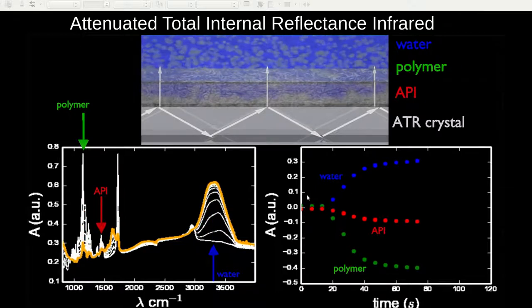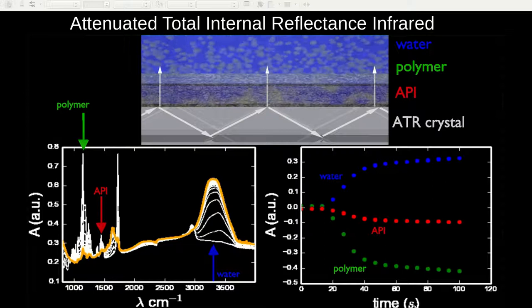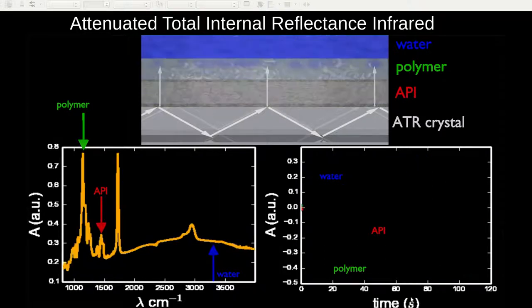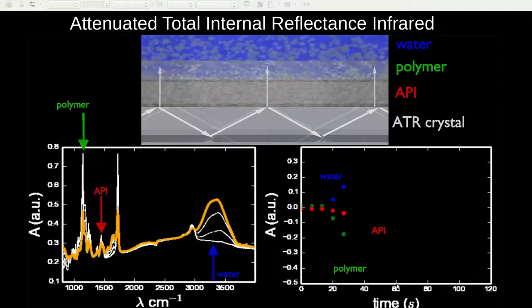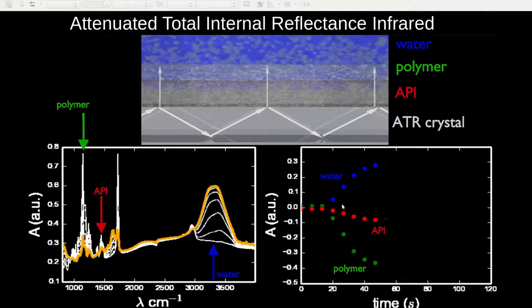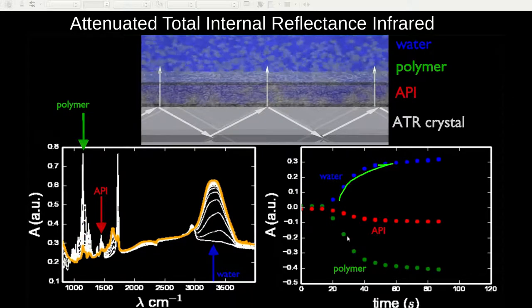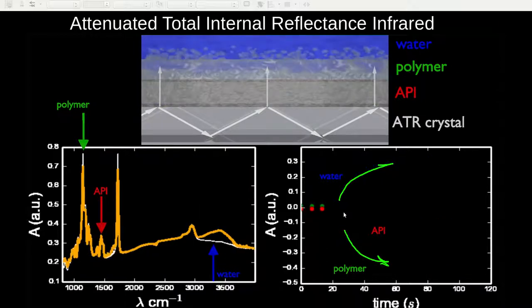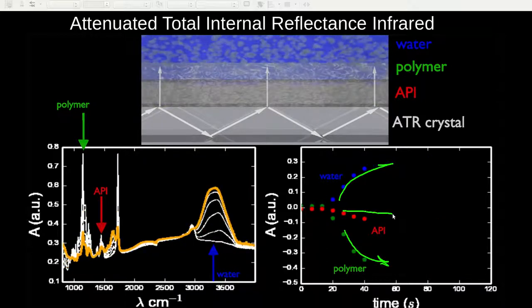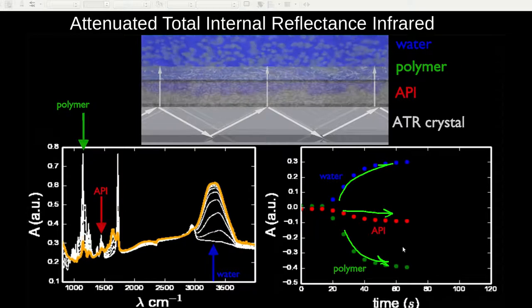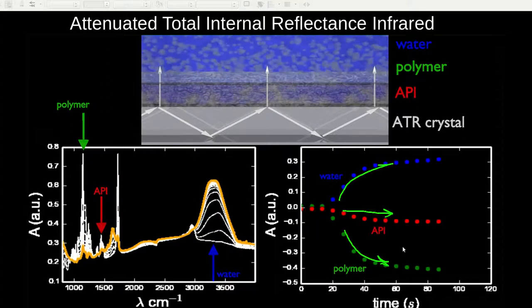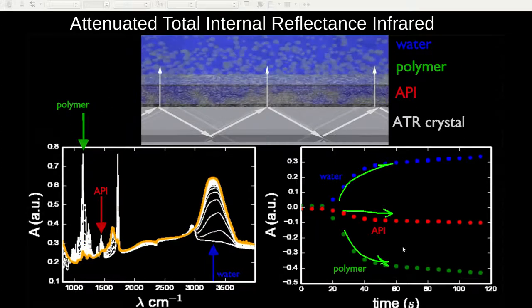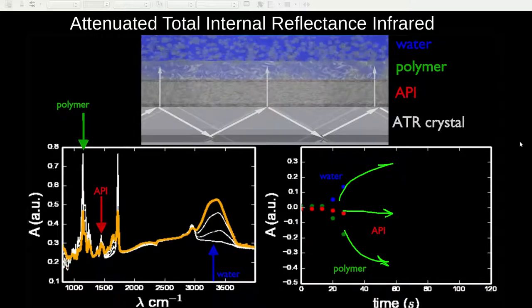Finally, the plot on the right plots the absorption as a function of time of the experiments. This clearly shows the rate at which the different components are dissolving. We see the water peak growing in, the polymer peak growing down, and a slower but noticeable slight decrease in the API signal. Therefore, using this technique, we can differentiate the selective dissolution of the different components.